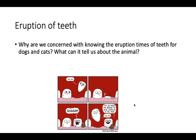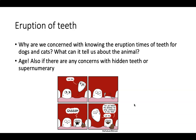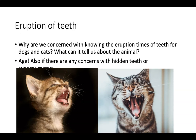Why are we concerned with knowing the eruption times of teeth for dogs and cats? It can tell us about the animal's age, and also alert us to concerns with hidden teeth or supernumerary teeth — meaning extra teeth beyond the normal amount. We know that teeth erupt at certain times, so when we check an animal's teeth, whether they have all adult teeth or only baby teeth tells us a lot about their age.